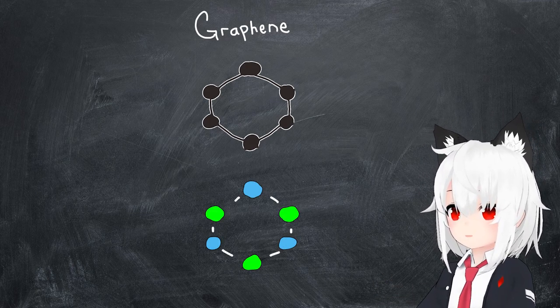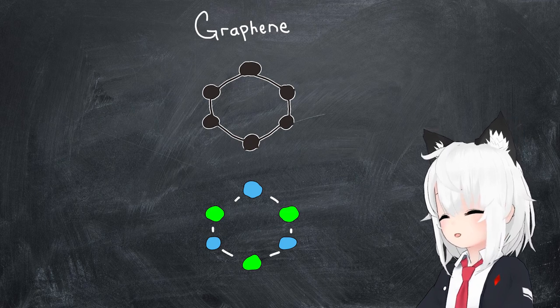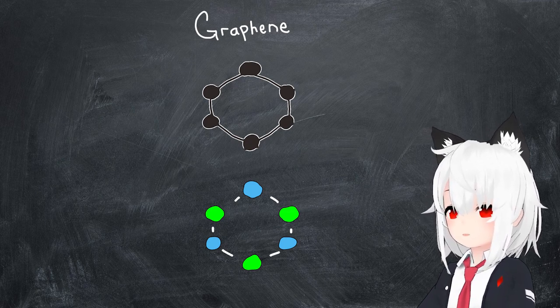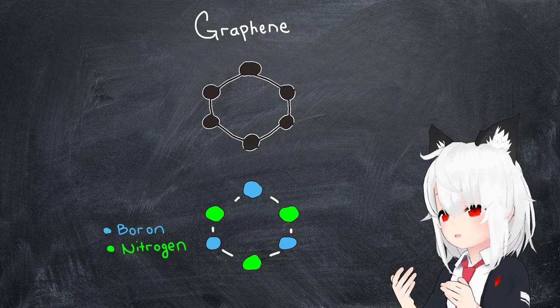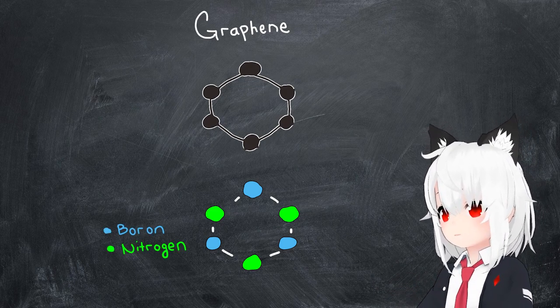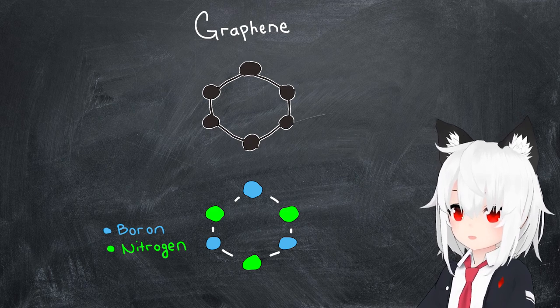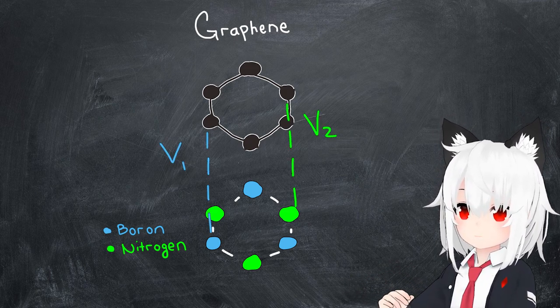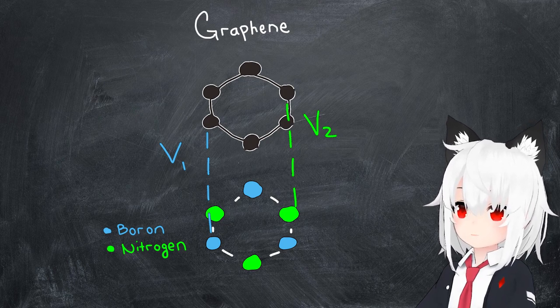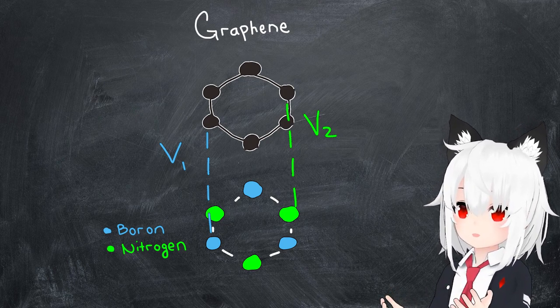One way might be to place graphene on top of another material which also has a hexagonal structure but whose neighboring atoms are different, as is the case in, for example, hexagonal boron nitride. In this case, the carbon atoms of graphene would be exposed to a spatially varying electrostatic potential, which would break inversion symmetry in the more energetic way that we talked about earlier.